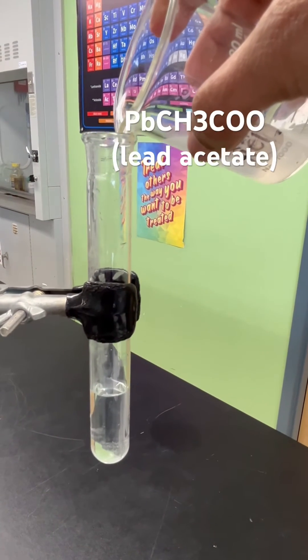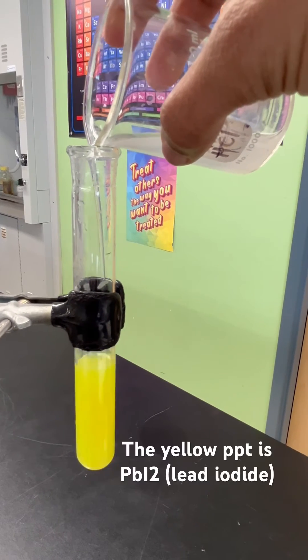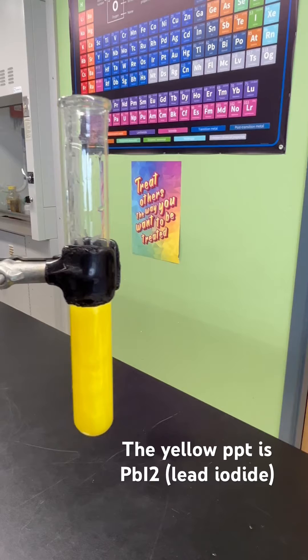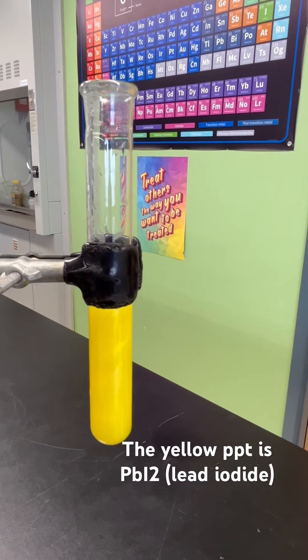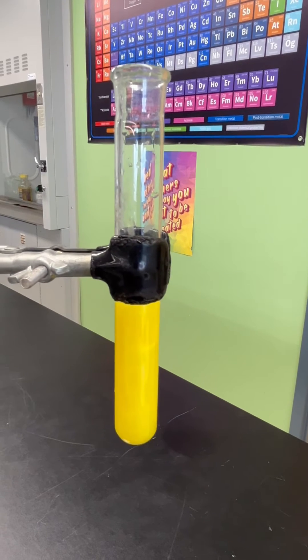And now we're going in with the lead acetate. So let's react the lead acetate and we've got a very nice bright yellow precipitate. It's a solid precipitate that's insoluble in water and that's why it comes out of solution.